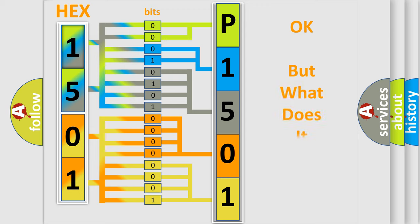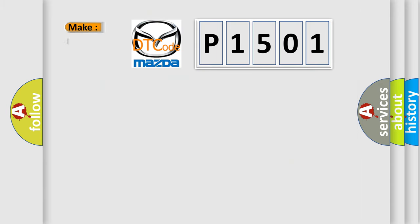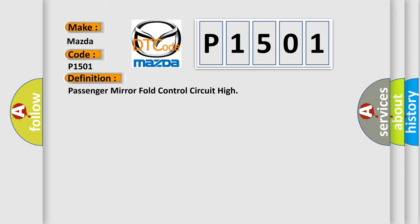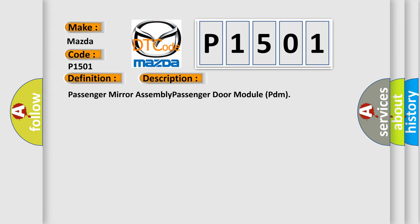We now know in what way the diagnostic tool translates the received information into a more comprehensible format. The number itself does not make sense to us if we cannot assign information about what it actually expresses. So, what does the diagnostic trouble code P1501 interpret specifically for Mazda car manufacturers? The basic definition is: Passenger mirror fold control circuit high. This is a short description of this DTC code, relating to the passenger mirror assembly and Passenger Door Module (PDM).